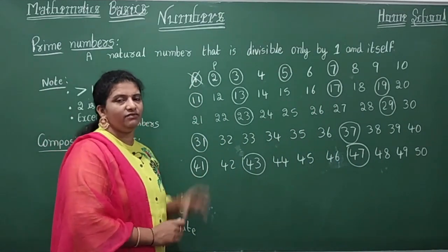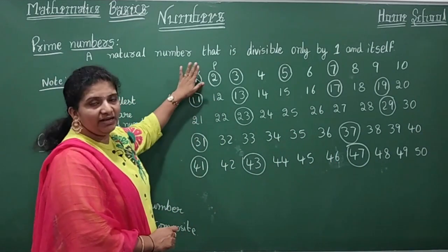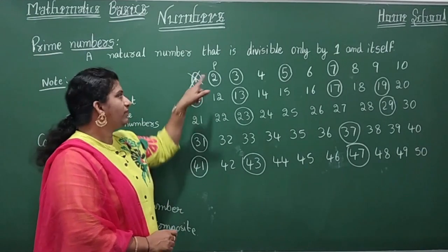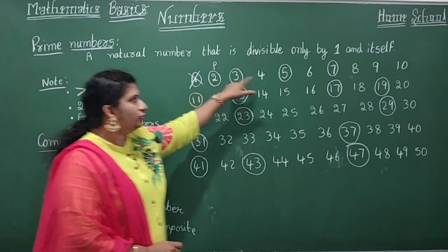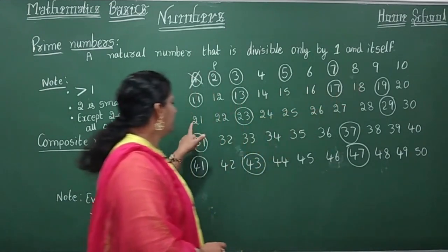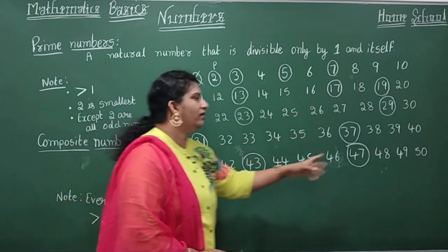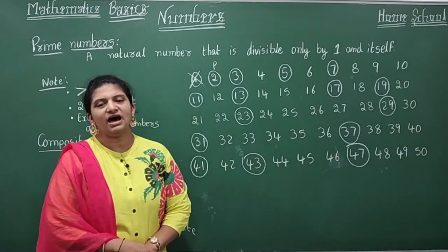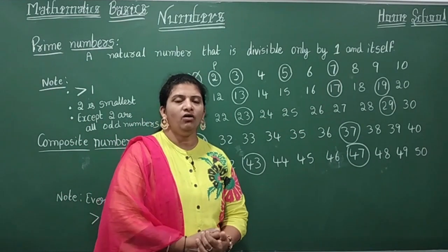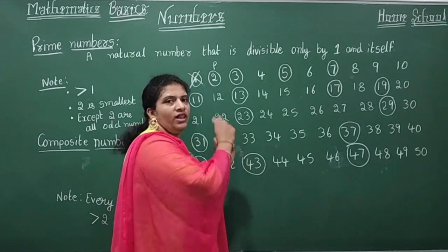Now let's count how many prime numbers there are from 1 to 50. Remember, one is neither prime nor composite — don't consider one. Counting all the circled numbers: there are 15 prime numbers between 1 and 50. All the remaining numbers other than the circled ones are called composite numbers.